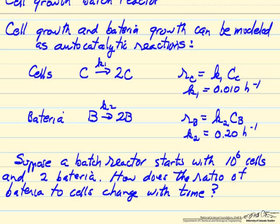This is an example of comparing the growth of cells and bacteria in a system where we start out with mostly cells and just a few bacteria. We're going to model these as autocatalytic reactions since when we have one cell and because the nutrients are present, we end up with two cells.